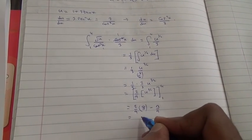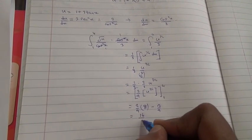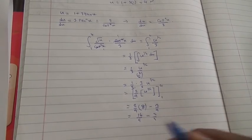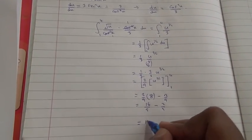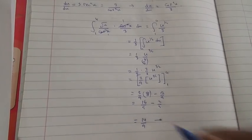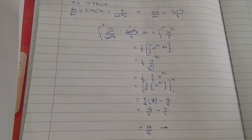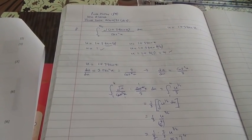16 over 9 minus 2 over 9. The answer should be, then, the exact value is 14 over 9. Here we are for the second question. The answer should be.